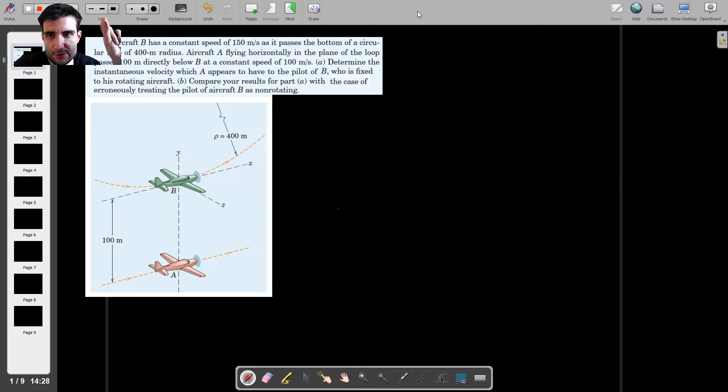So what we have to do is, we have to find the instantaneous velocity for this particular moment that was shown here. We have to find the instantaneous velocity which A appears to have with respect to someone in aircraft B, which once again is rotating. And then in part B of the question, we have to do the same thing again, but this time we're going to ignore the fact that B is rotating.